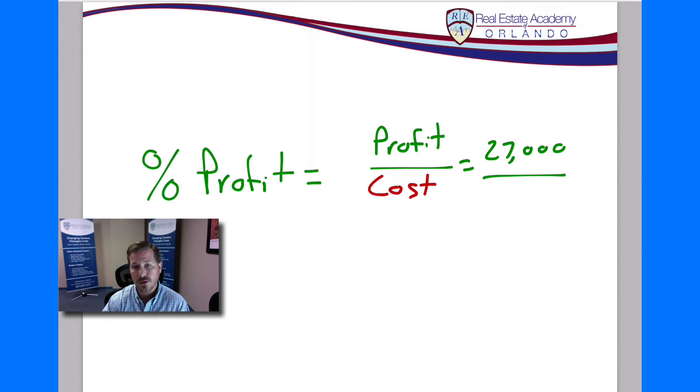So we know our profit is $27,000 and we know our cost was $75,000. So now we know that our percentage of profit is going to be 0.36, $27,000 divided by $75,000. So that's going to equal 0.36 or that's also written as 36 percent. So that is going to be our correct answer here.